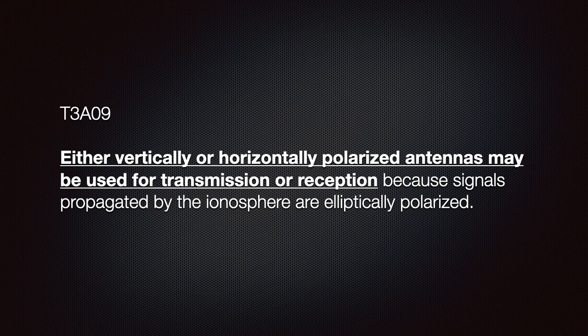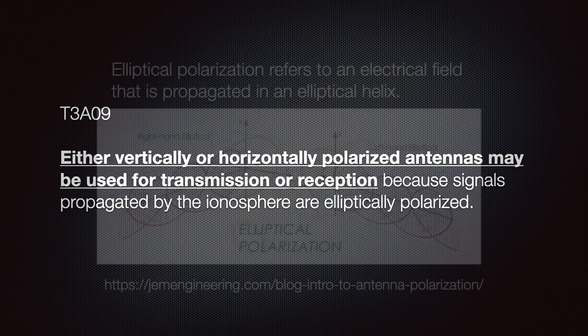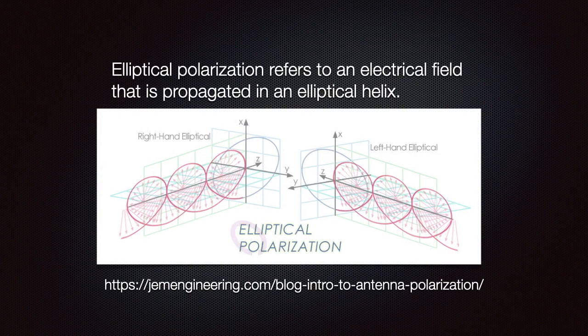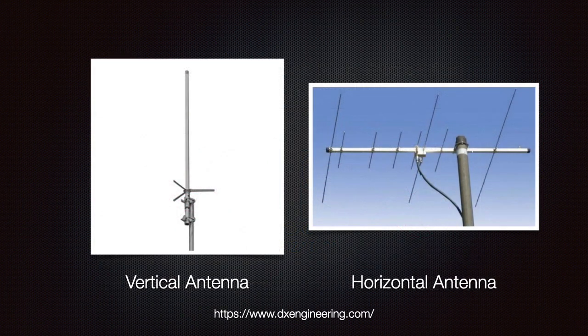You should know that either vertically or horizontally polarized antennas may be used for transmission or reception, because signals propagated by the ionosphere are elliptically polarized. Radio waves bouncing off the ionosphere are not only elliptical but also spiraled in a helix. This slide shows two dual-band 2-meter and 70-centimeter antennas — one vertically polarized and the other horizontally polarized.